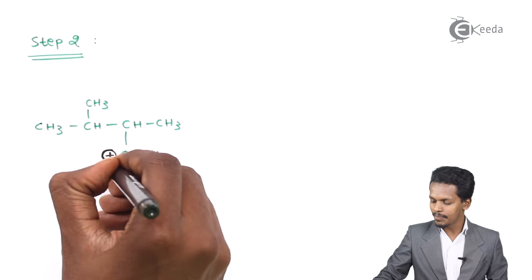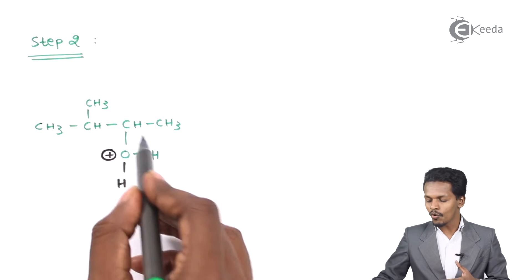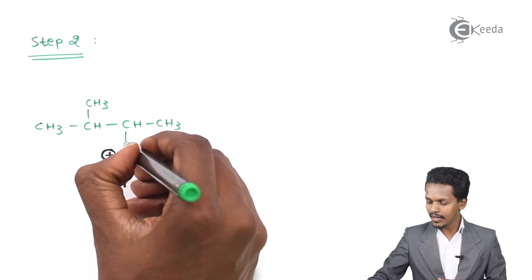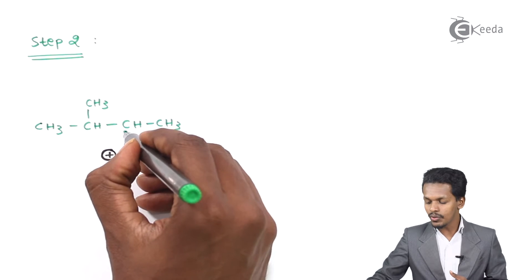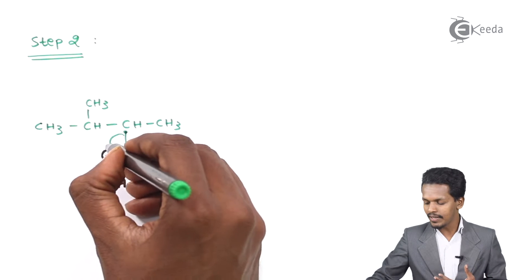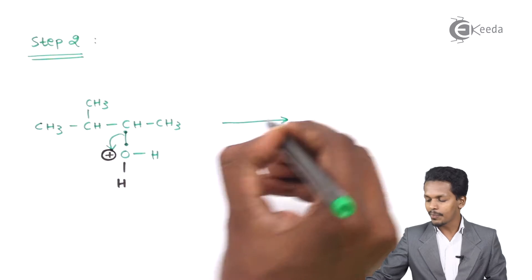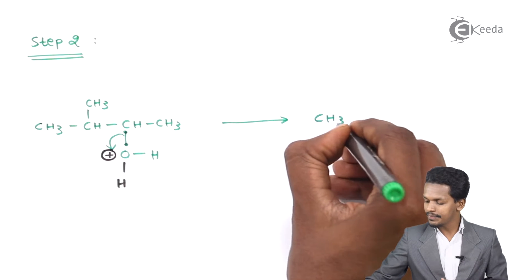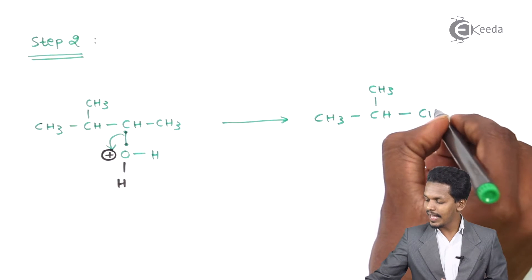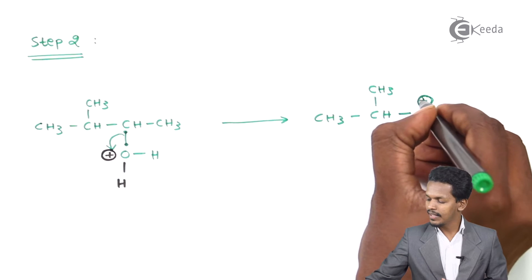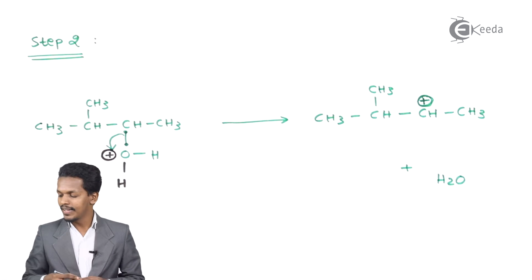The water molecule is removed. Because of the positive charge on the oxygen atom, the two electrons come back to the oxygen, causing the carbon atom to acquire a positive charge. The product obtained here is CH3-CH+-CH(CH3)-CH3, and the by-product is H2O.